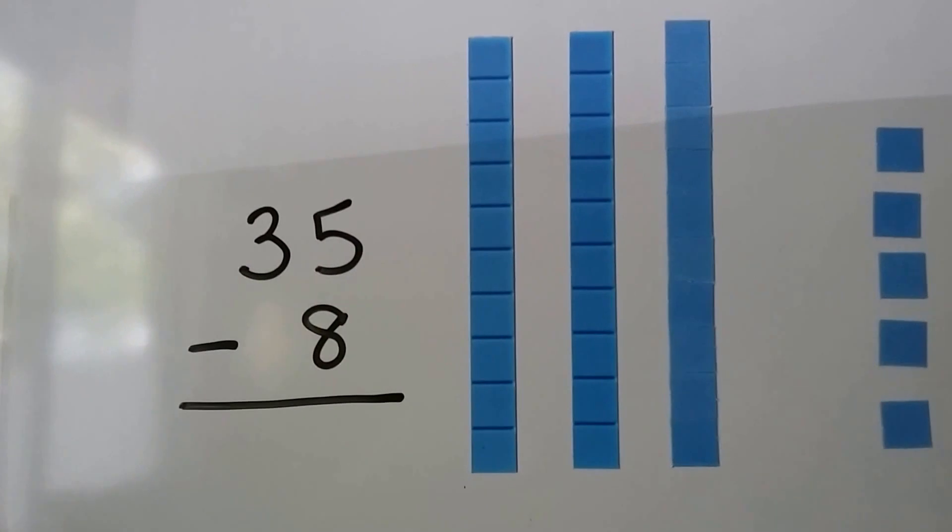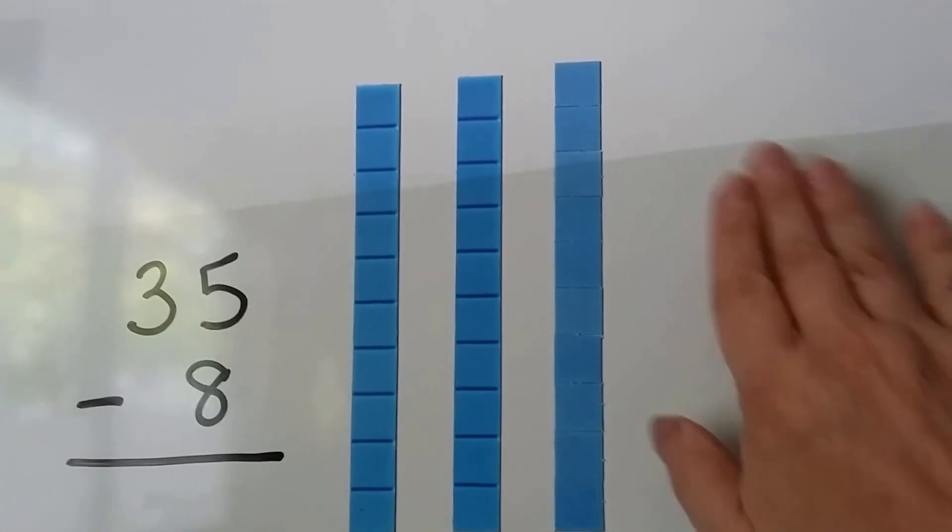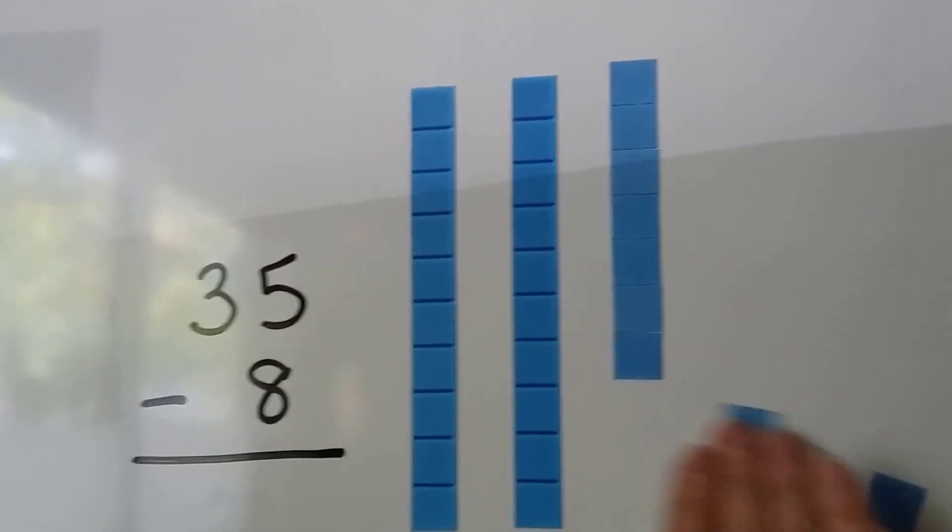We need to take 8 away. And we can take away 1, 2, 3, 4, 5, and we can take some away from this 10. 6, 7, 8.